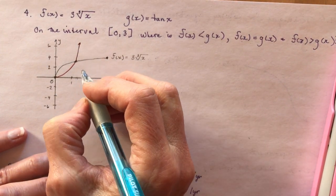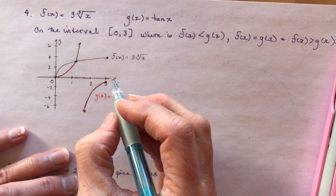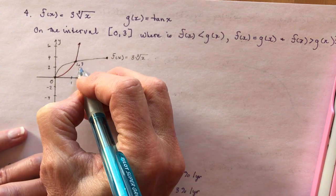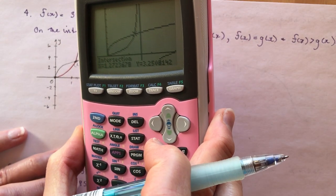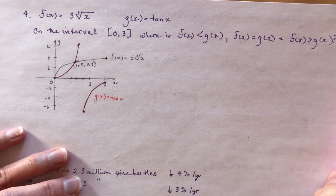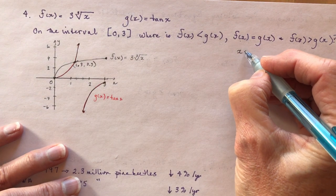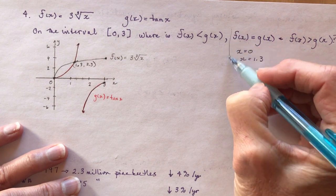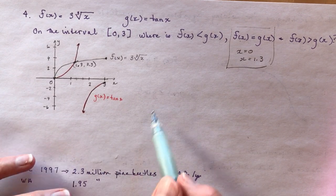Rounding to one decimal place, the intersection is at approximately x = 1.3, y = 3.3. So f(x) equals g(x) at x = 0 and x = 1.3. Now for where f(x) is less than g(x)...